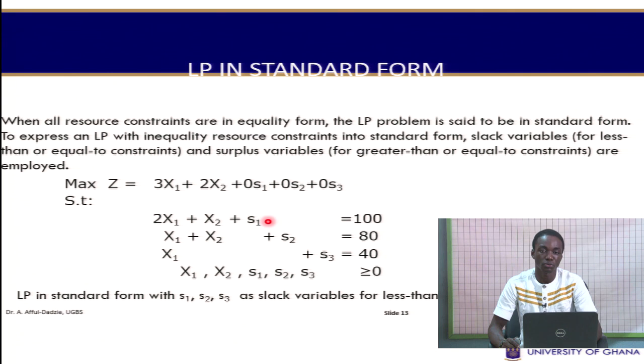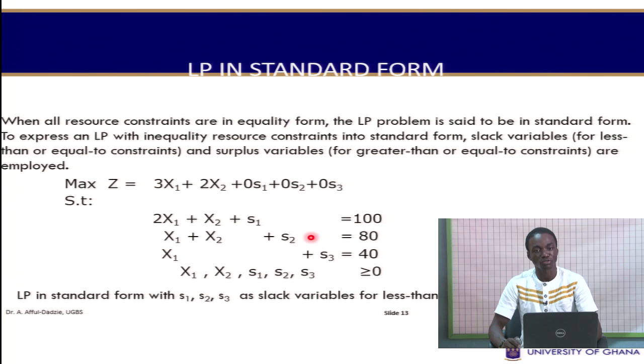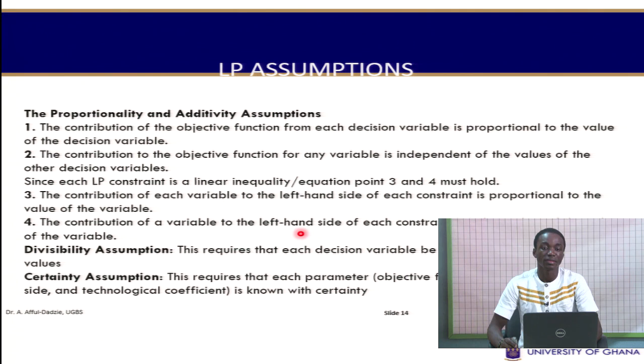Surplus variables represent excess over a minimum requirement. For example, if you need to score 80 to get an A and you score 90, you have an excess of 10 marks. So your 90 minus the surplus of 10 equals the minimum requirement of 80. For less-than-or-equal-to constraints you add a slack, while for greater-than-or-equal-to constraints you subtract a surplus.